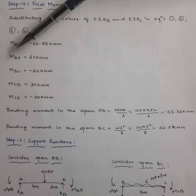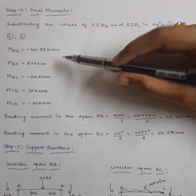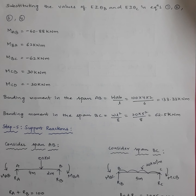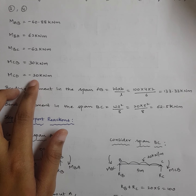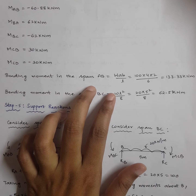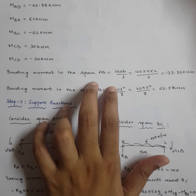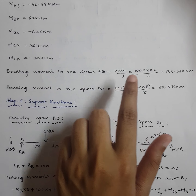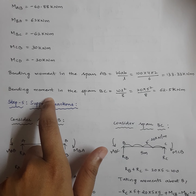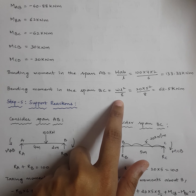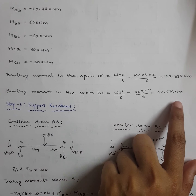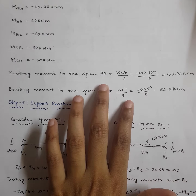At joint B we applied the equilibrium condition so M_BA + M_BC = 62 − 62 = 0. At joint C, M_CB + M_CD = 30 − 30 = 0. To complete the bending moment diagram, we also need the bending moments due to the applied loading. In span AB with an eccentric point load, the BMD is a triangle with height Wab/L = 100 × 4 × 2 / 6 = 133.33 kN·m. In span BC with a UDL, it's a parabola with height WL²/8 = 20 × 5² / 8 = 62.5 kN·m.